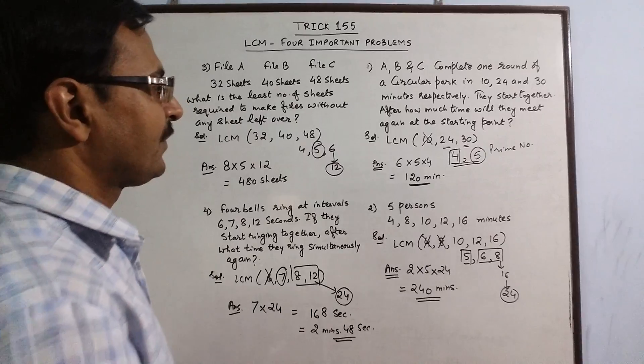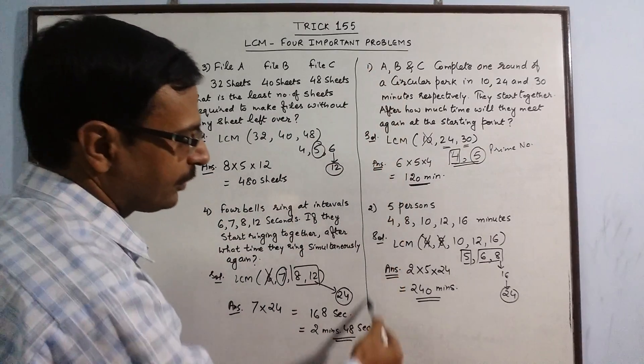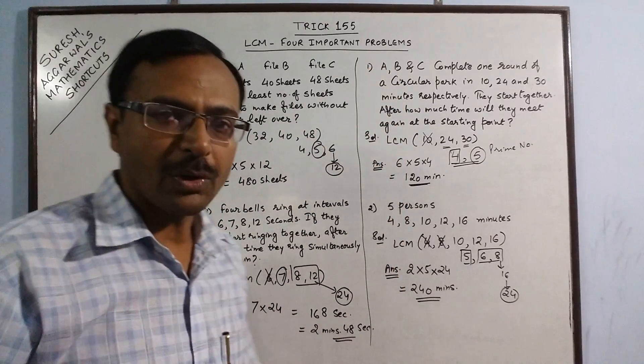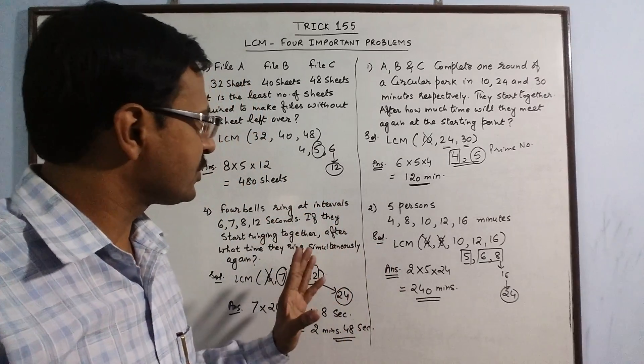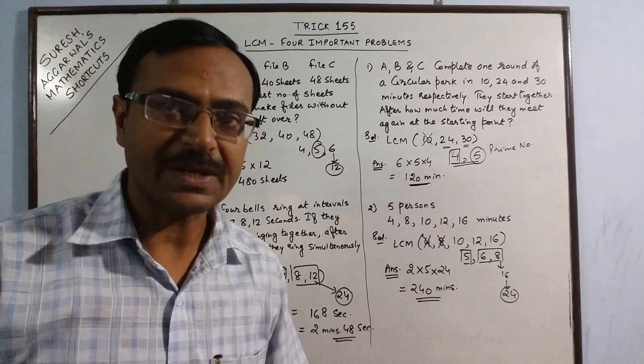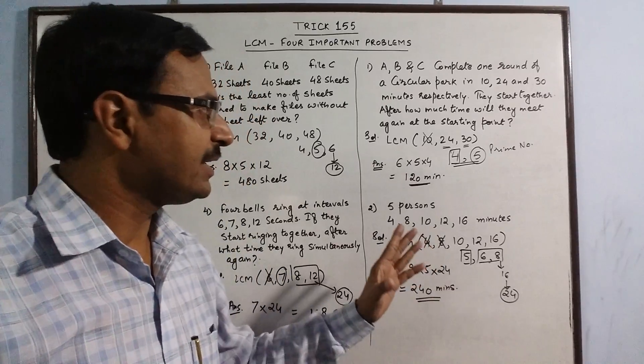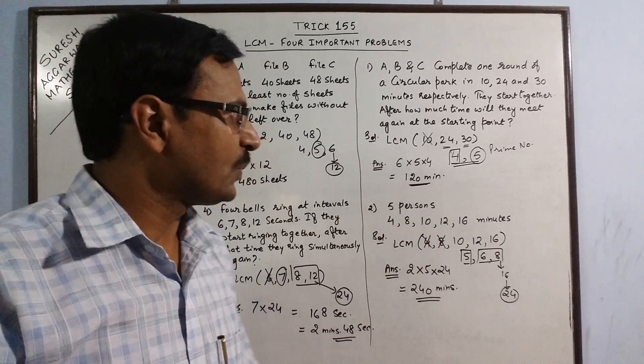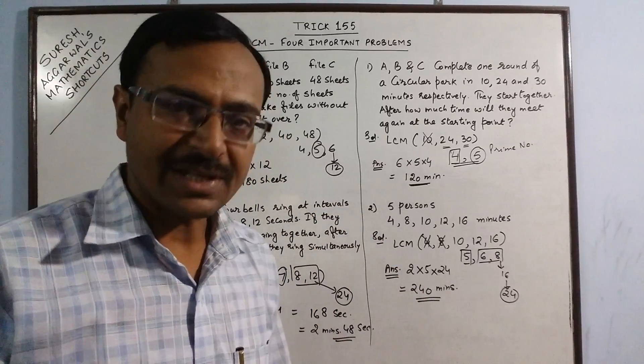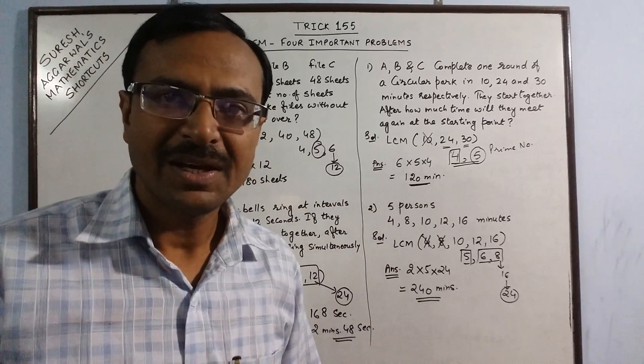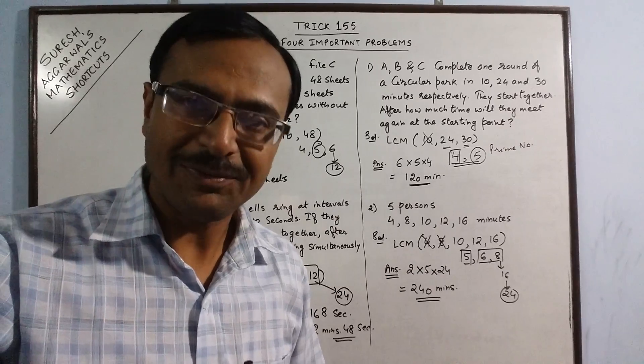You see LCM of 2 or more numbers can be found out by using this amazing shortcut through which method of observation or inspection is utilized for finding the LCM. Use these methods in competitive exams and save your precious time. Keep loving mathematics and share and subscribe the channel if you like it.